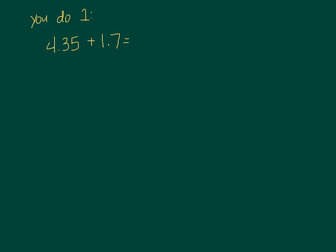Okay, and this will be you do number one. Be sure to line them up. Be really neat about it. It's really important to be nice and neat when you're working with decimals. So you're doing 4.35 + 1.7. Go ahead and push pause and do that problem and get an answer. When you have an answer push play to see if you got it correct.